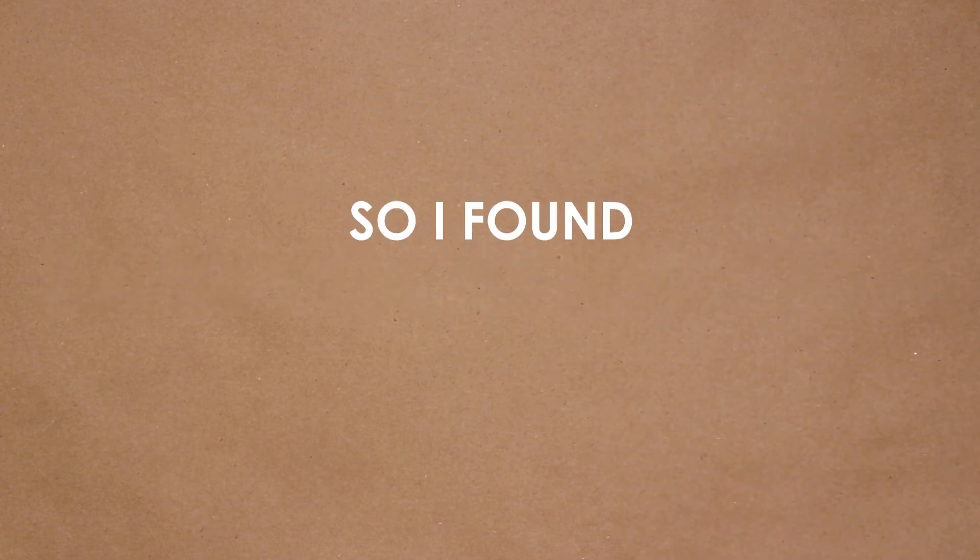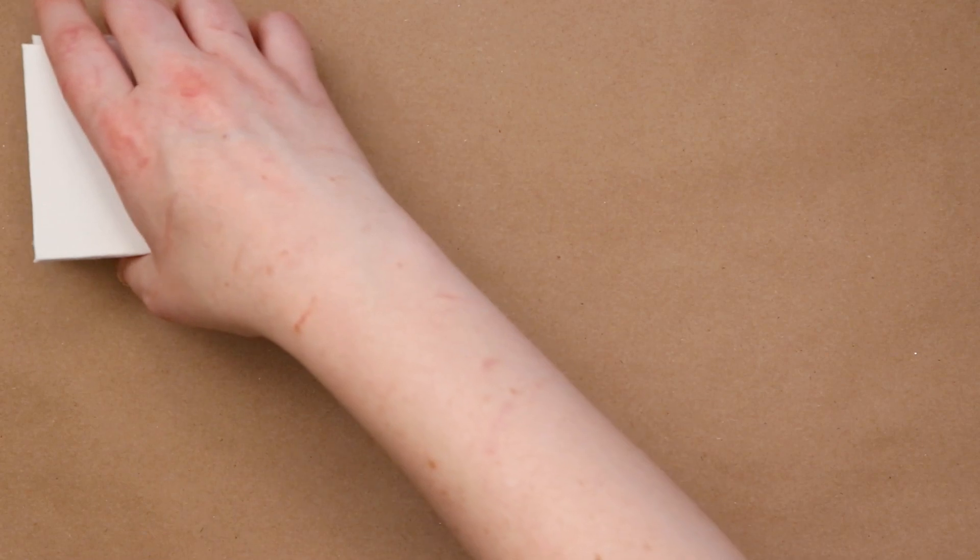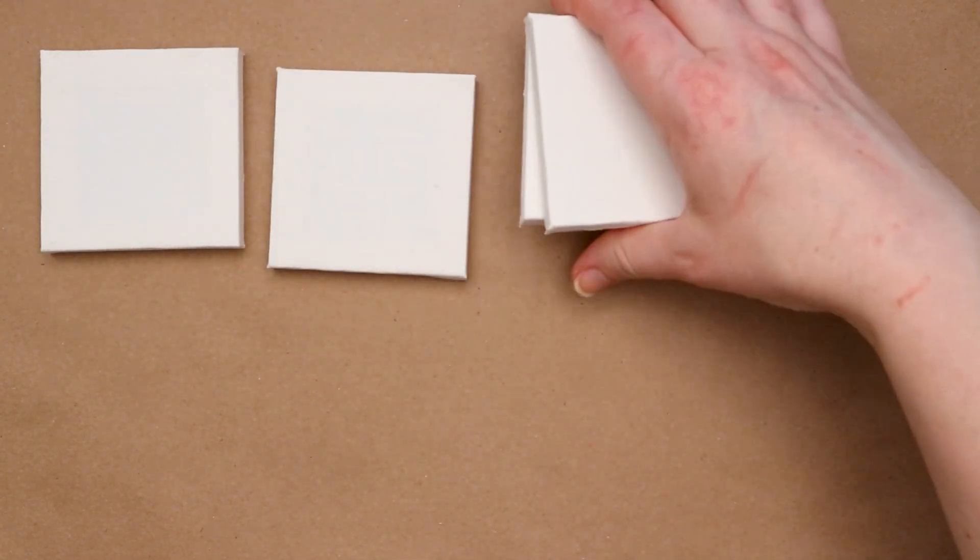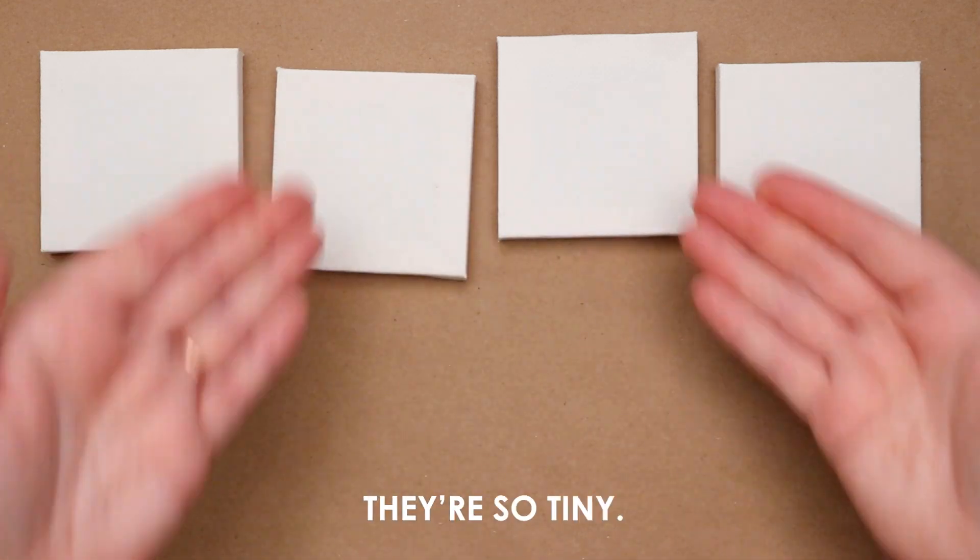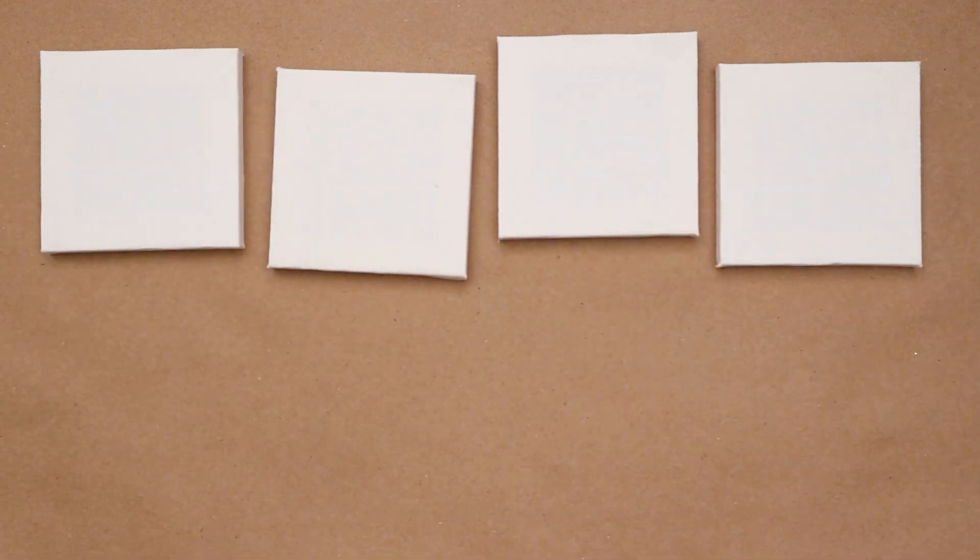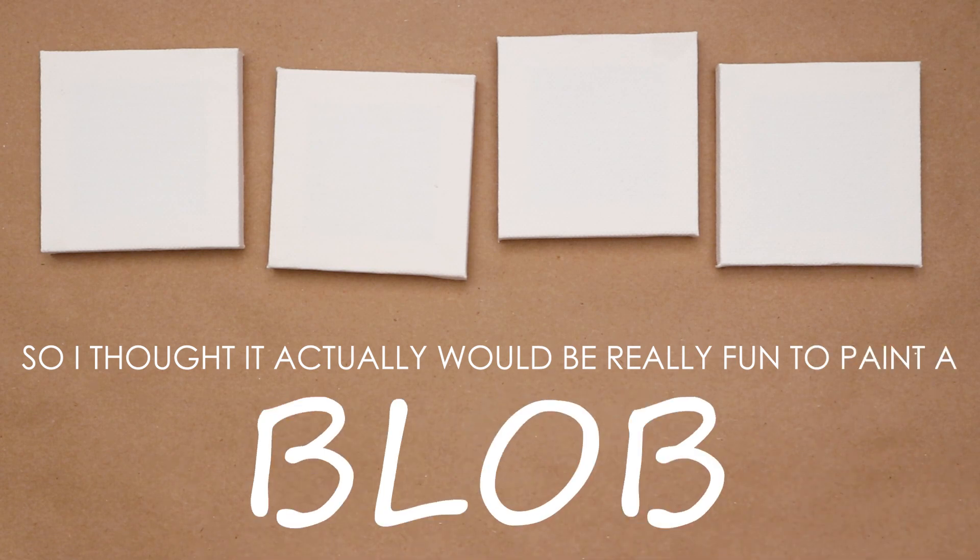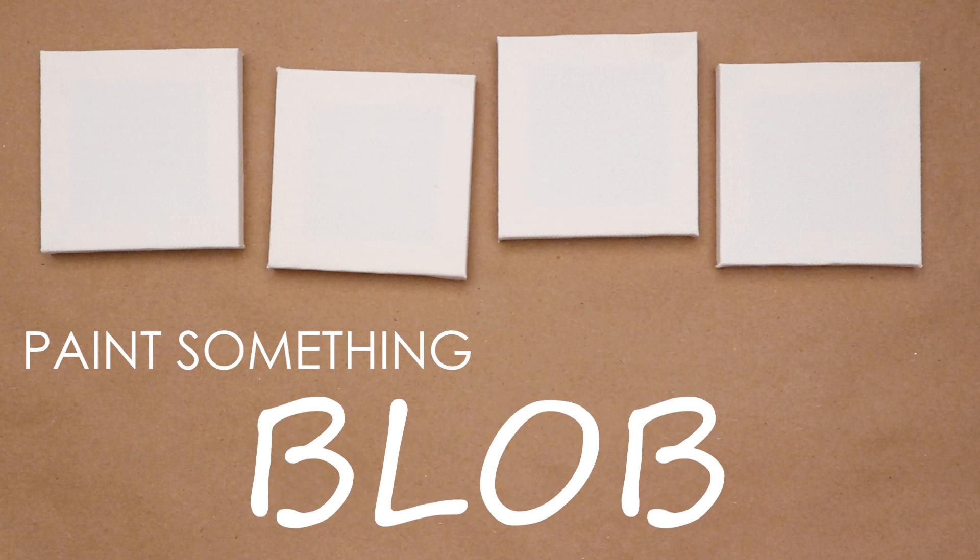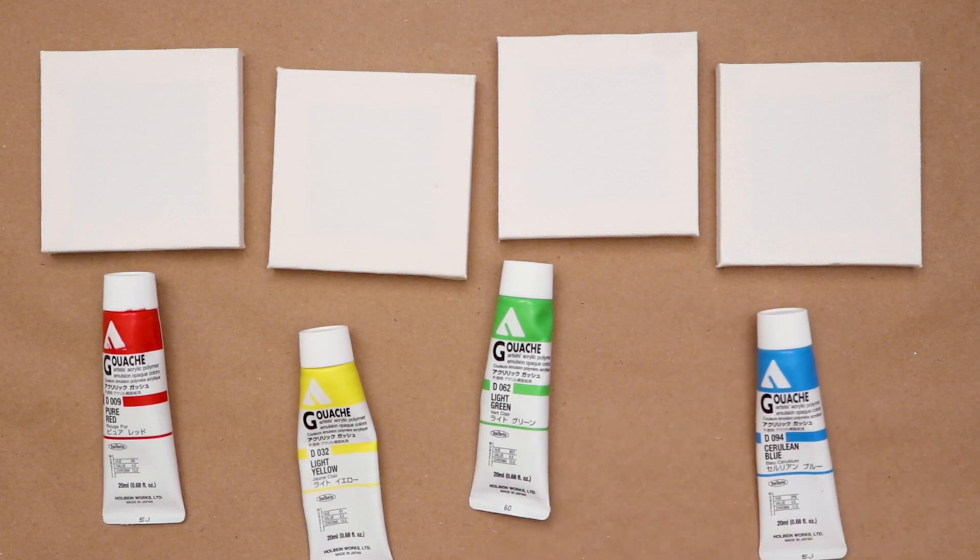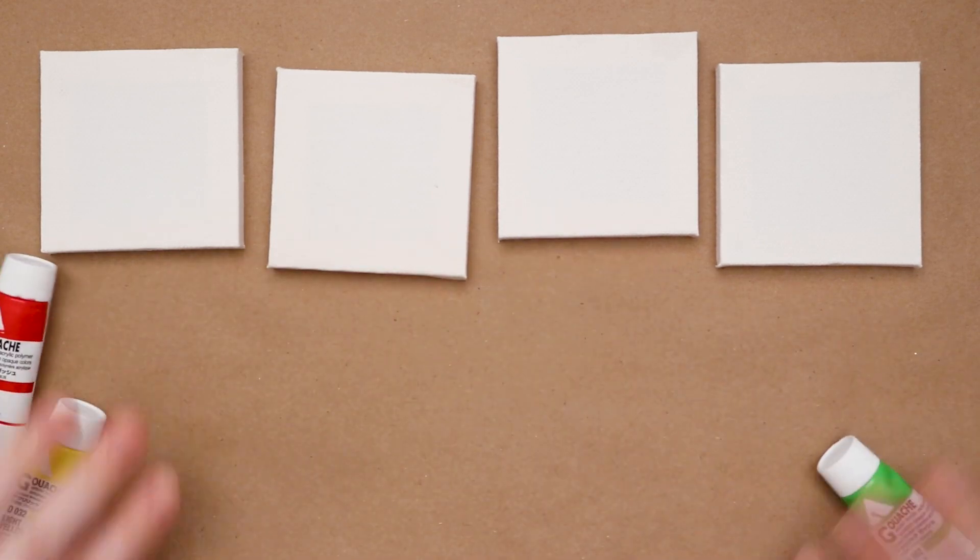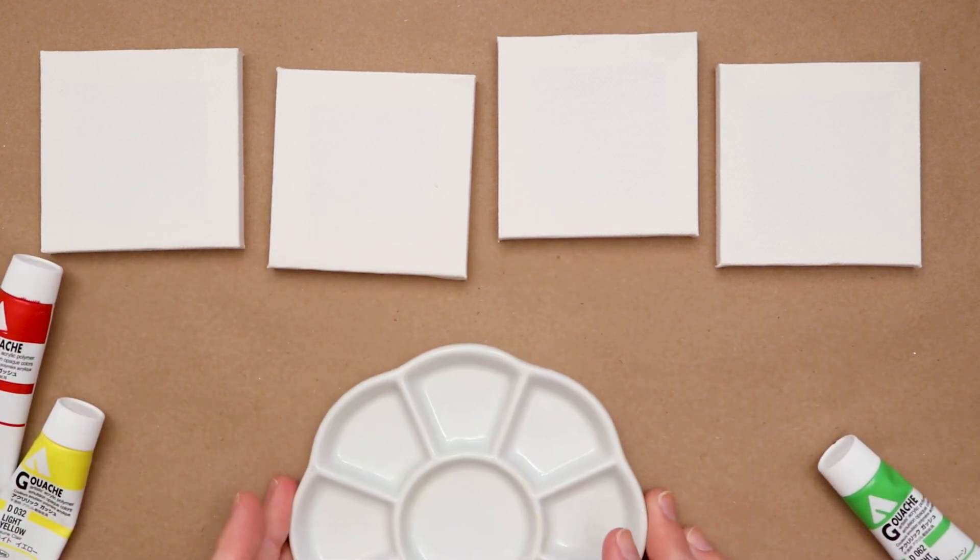So I found myself at my local art shop and I saw these adorable tiny little canvases. Look at them, they're so tiny. I've also really been into my gouache paints, so I thought it would actually be really fun to paint a blob of color on each of these canvases and paint something inspired by those blobs. Let's do red, yellow, green, and blue blobs and then get creative.